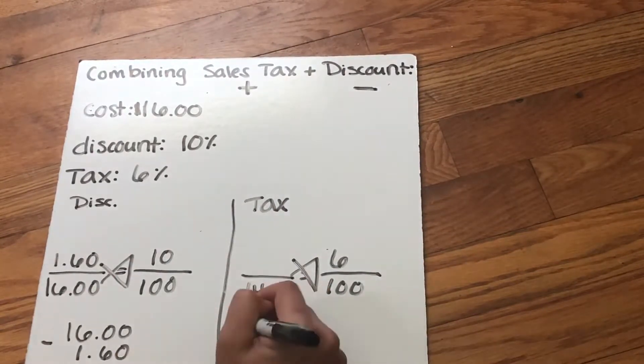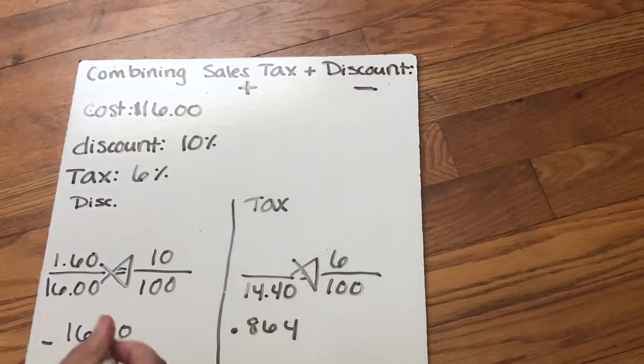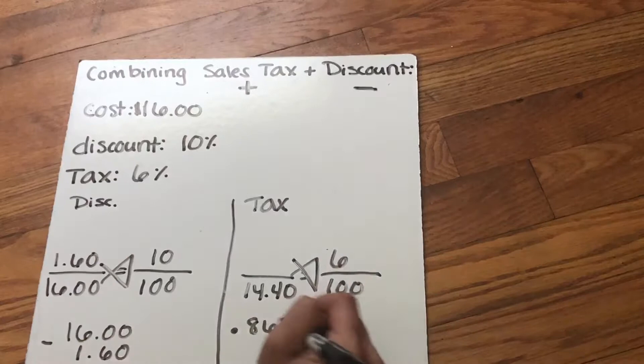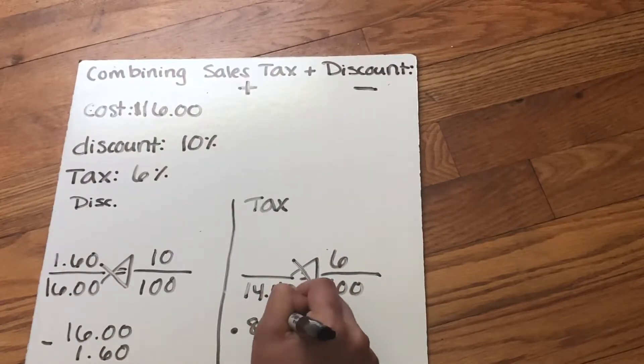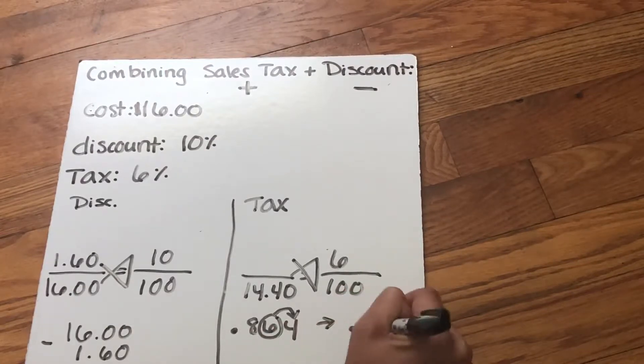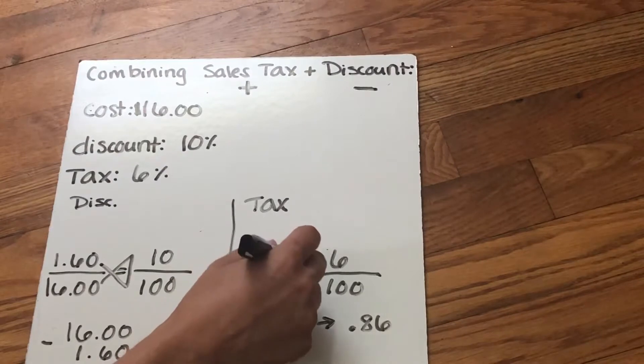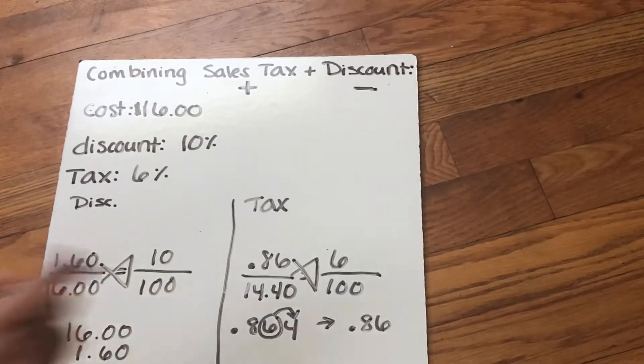And when I type that into my calculator, I get a number that looks like this, 0.864. I know that I'm looking at money, so I need to round. I'm gonna circle that hundredths place, look to my four. It's gonna stay the same at 0.86. So 86 cents is my tax on that $14.40.